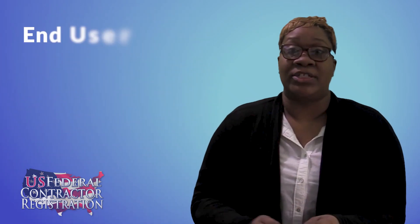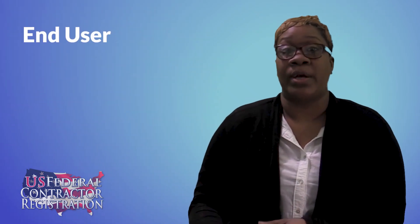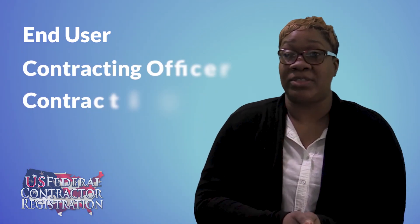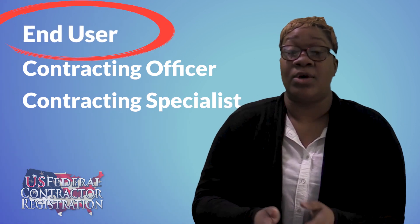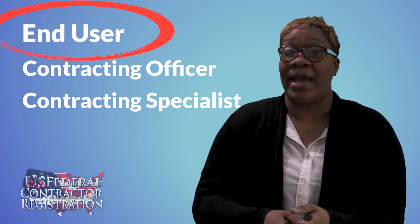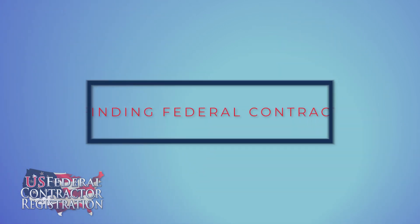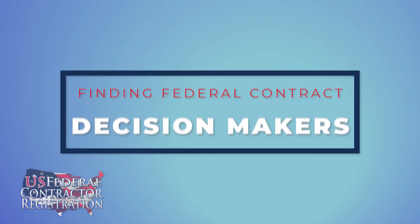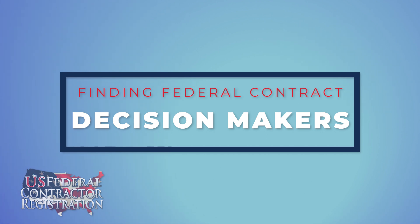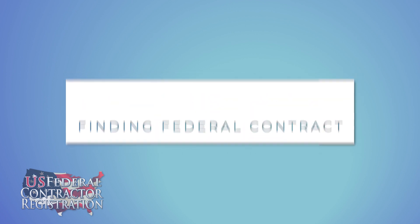The end user does not determine who a contract is awarded to. However, when they provide their request to the contracting officer, the contracting specialist, they do suggest who they would like to use. It is essential for the contractor, the vendor, to get in contact with the end user as well as the contracting officer.